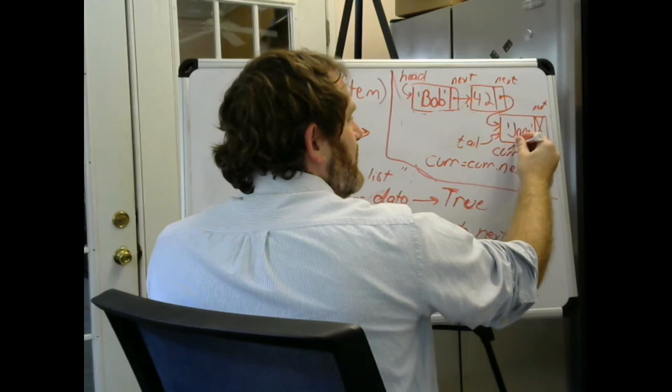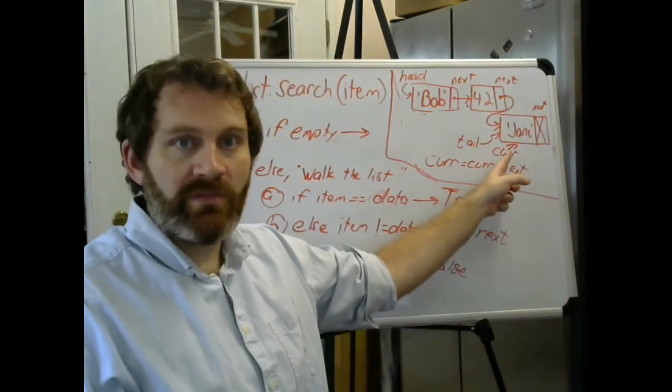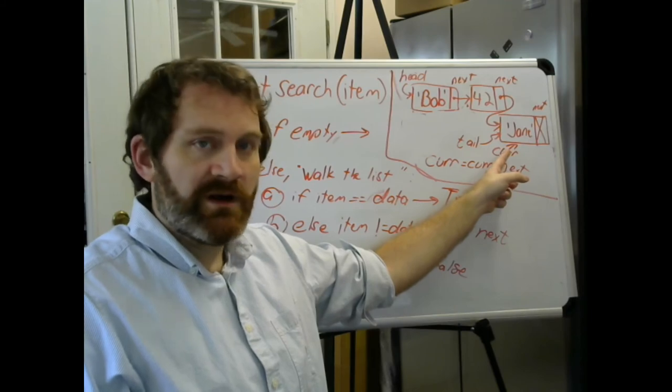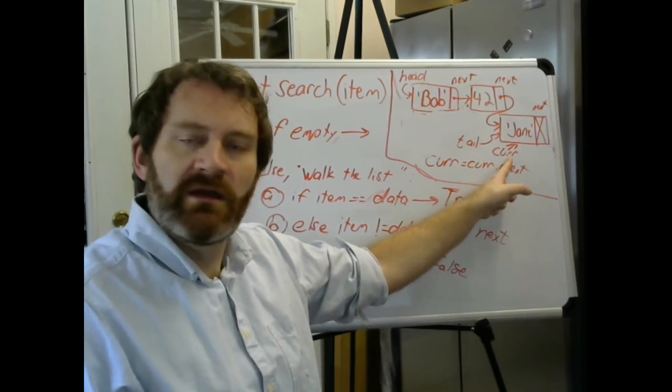When we get to the end of our list, cur will be here. But look at the while loop. While cur is not equal to none. Is cur equal to none? No. Cur is equal to this node. This node does have, it's a thing. It's there. It's not none.